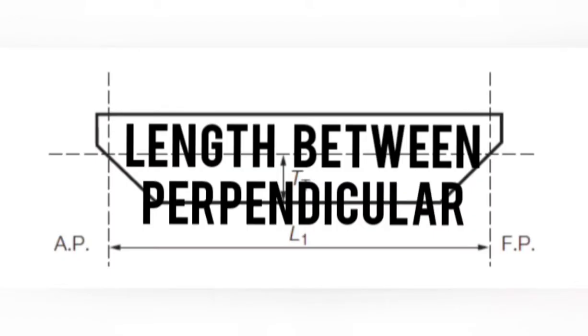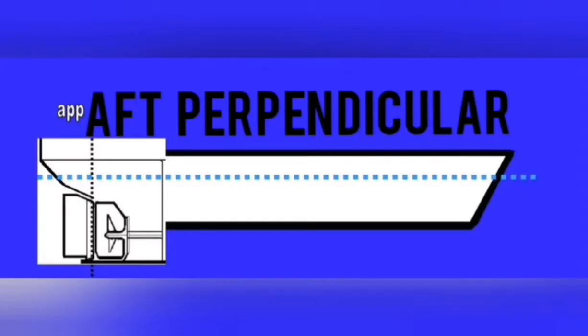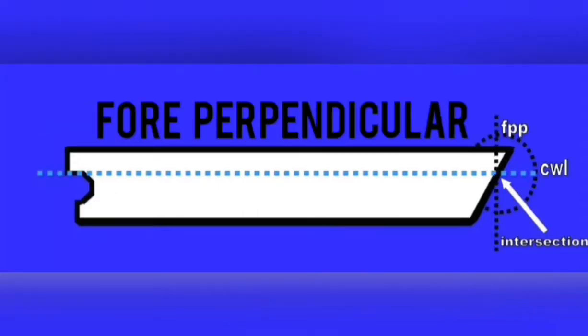Length Between Perpendiculars: It is the distance measured along the waterline between the aft and fore perpendiculars. The Aft Perpendicular is a vertical imaginary line taken at the aft side of the rudder post. The Fore Perpendicular is a vertical imaginary line through the intersection of the construction waterline and the stem.